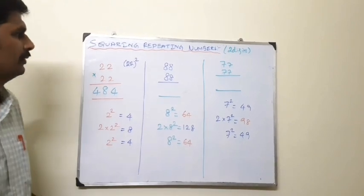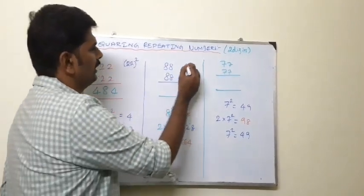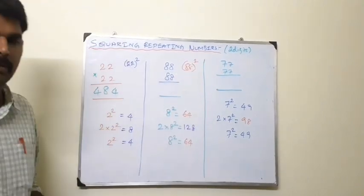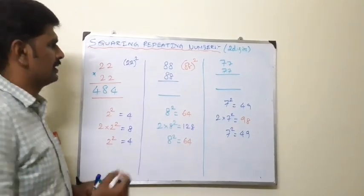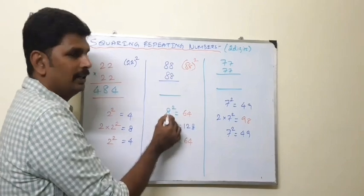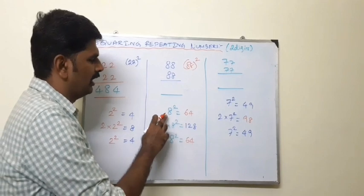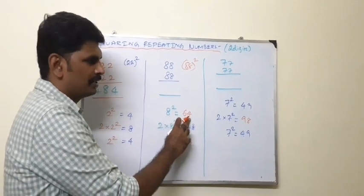Let's look at the next example, 88 into 88. That means 88 the whole square. This is the repeating number of the next example. First, we have 8 into 8, 8 squared. 8 squared equals 64.